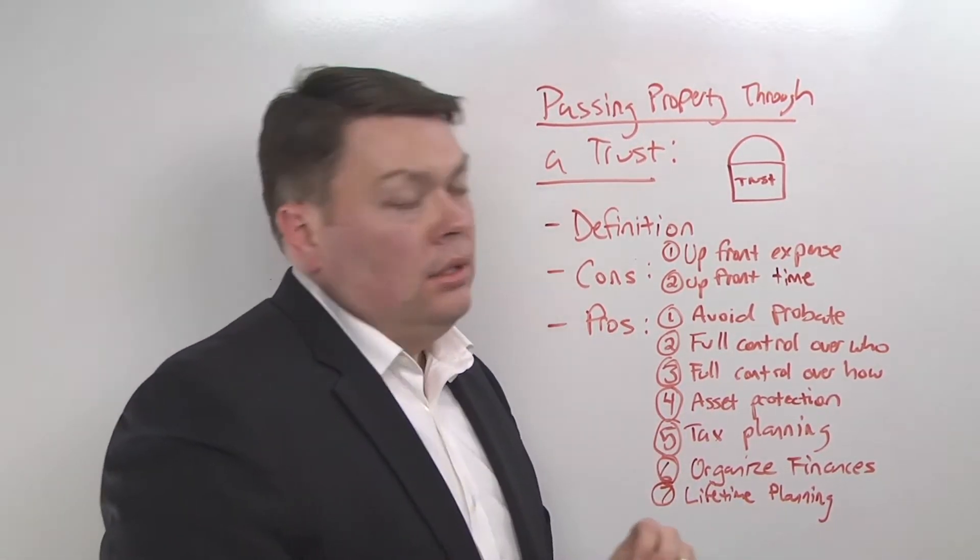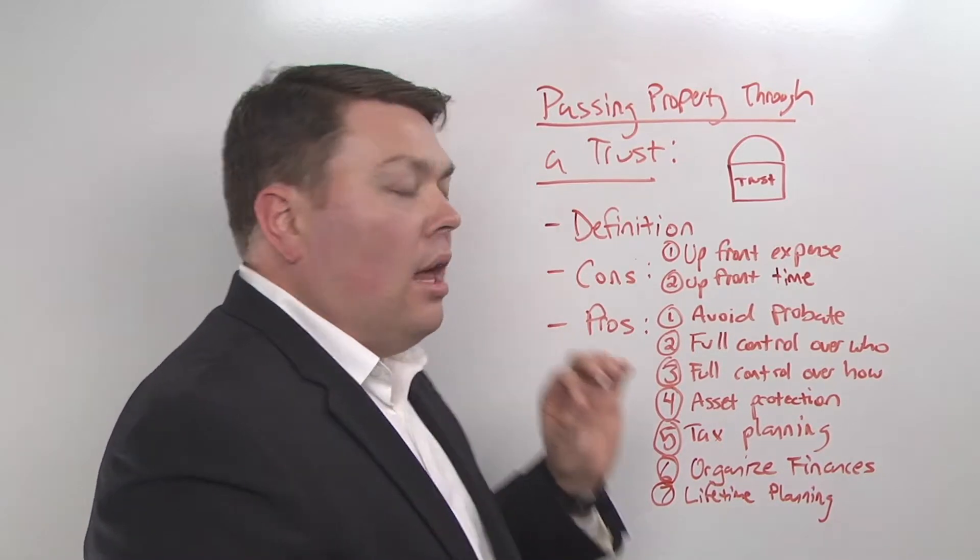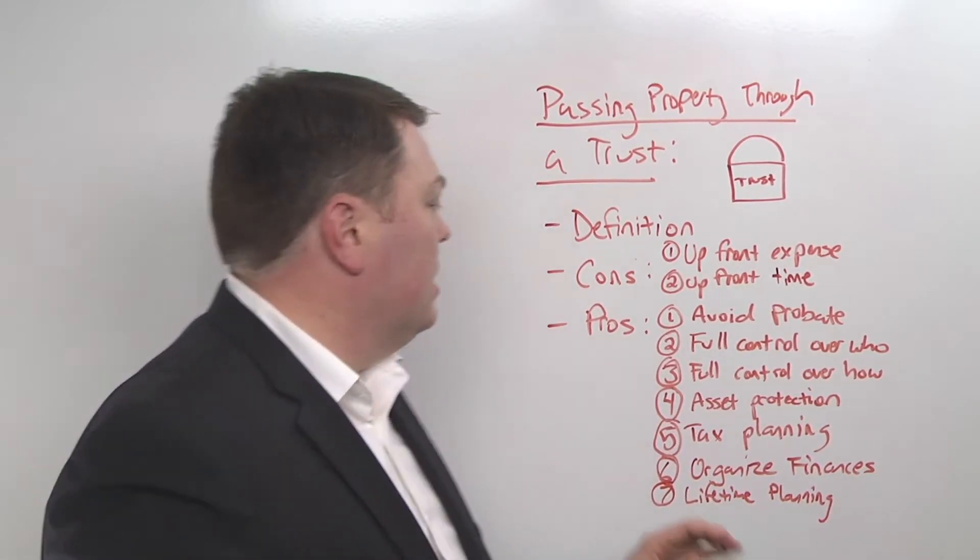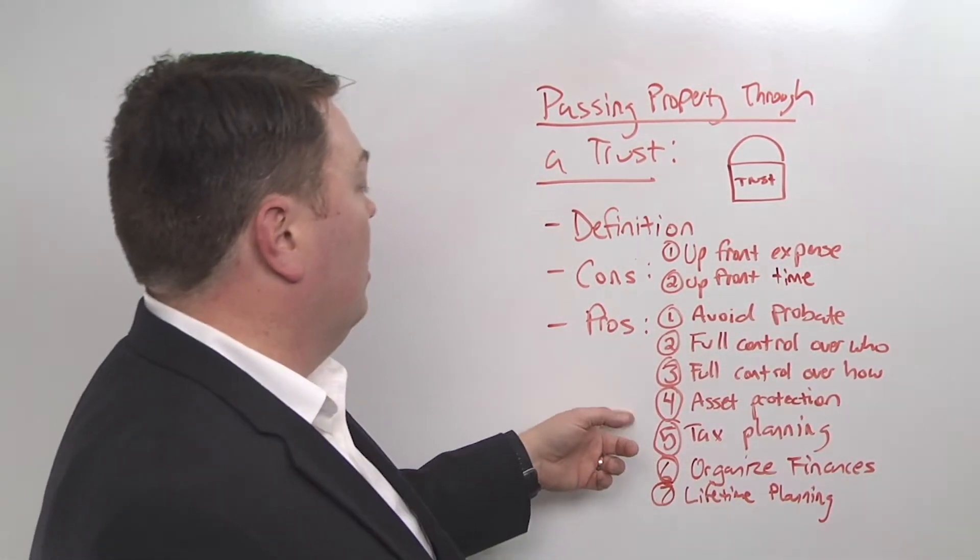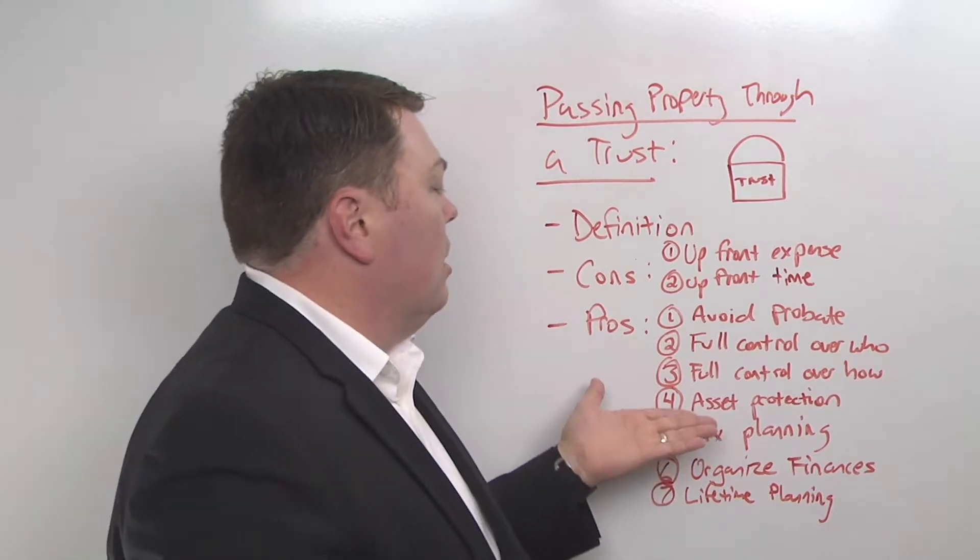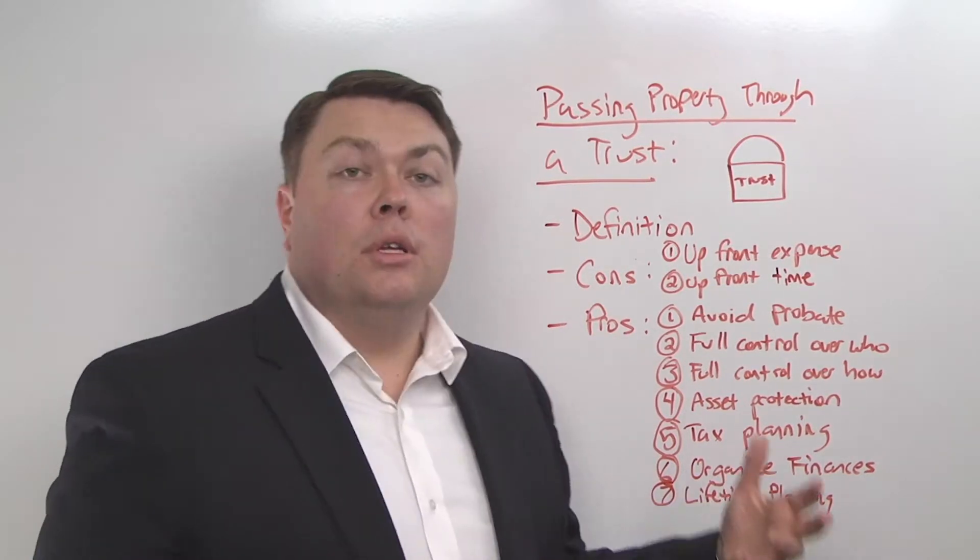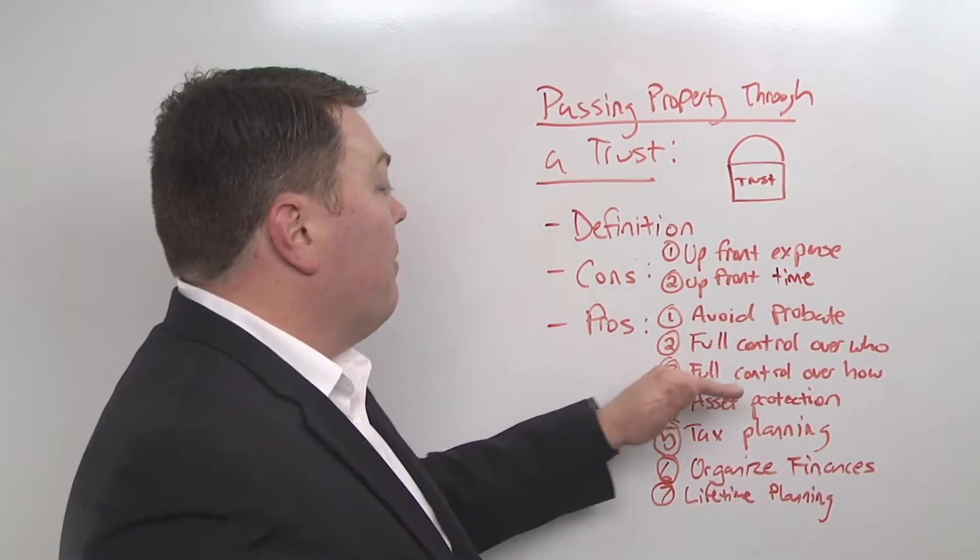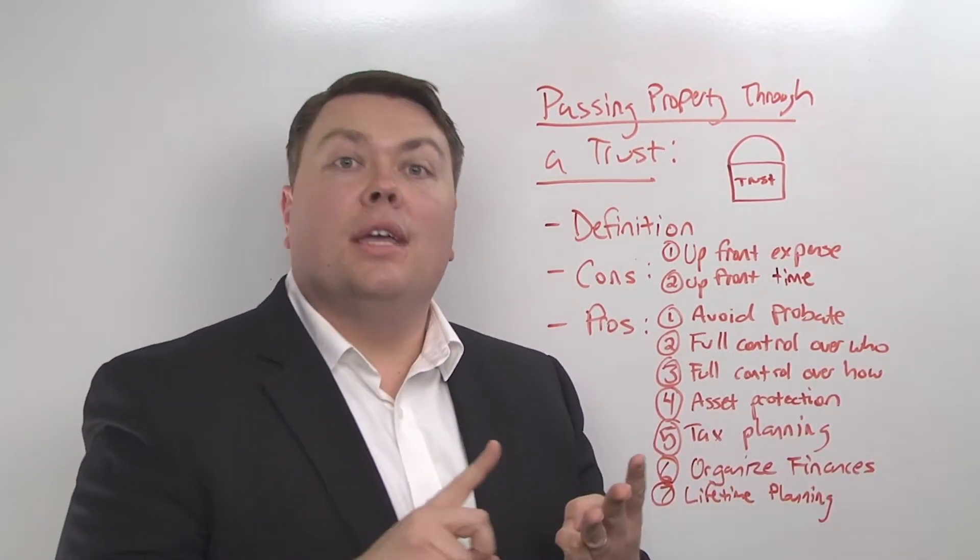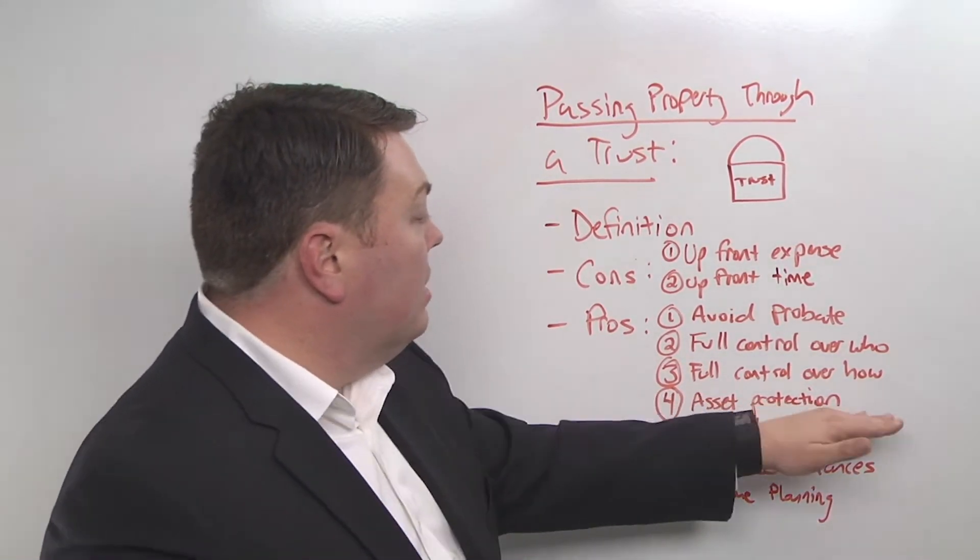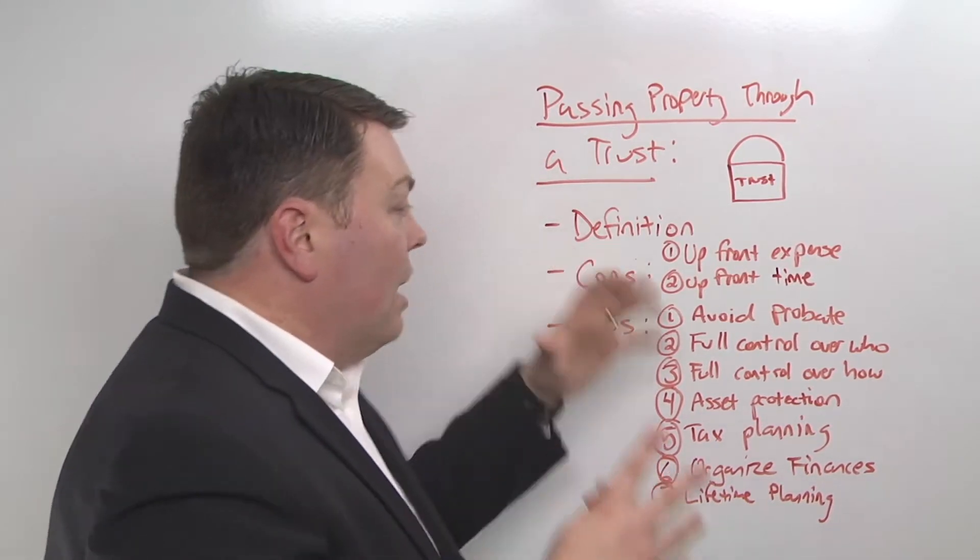Number four, asset protection. This is something that I get a lot of clients who have interviewed a few attorneys before they come see me, and this is something that isn't talked about enough by estate planning attorneys generally. There are ways that you can protect assets for your beneficiaries. There are methods with continuing trusts and things like that, so that if your beneficiaries go through a divorce or bankruptcy or if they get into a car accident and there's a lawsuit, there are ways to protect your beneficiaries' inheritance in a trust, and you can't do that in any other method.